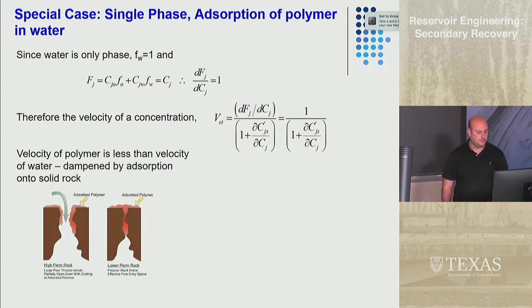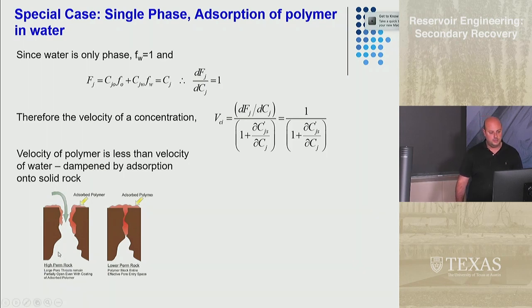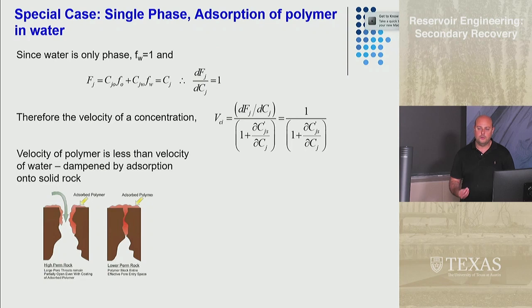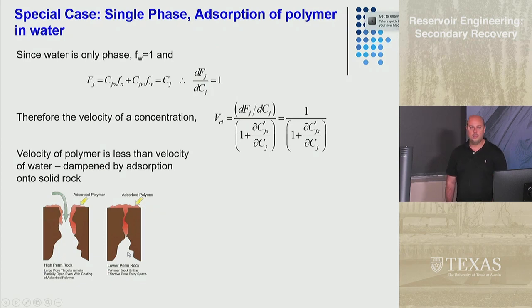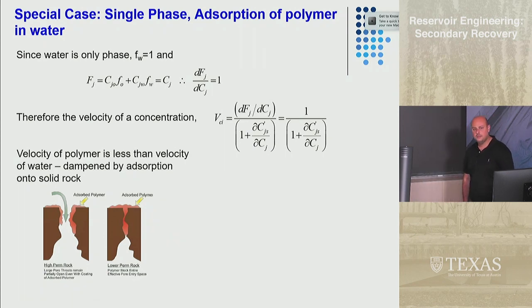In the absence of adsorption, that partial derivative term is zero, so the dimensionless velocity is 1 — the polymer travels at the same velocity as the fluid carrying it. If polymer is depositing onto the rock surface, the same concentration takes time to build up and lags behind, making the velocity less than 1. The adsorbing component moves slower than a non-adsorbing component or the fluid itself.